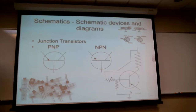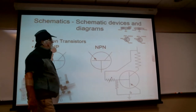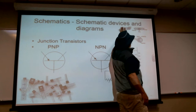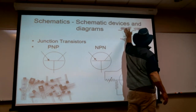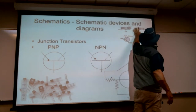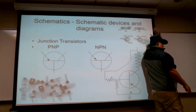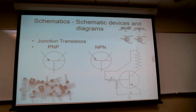If I take two of these junctions and put them together — either a PN and an NP, or an NP and a PN — we then make what's called a transistor.